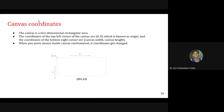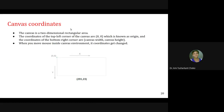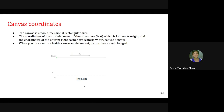By default, the canvas element has a width of 300px and height of 150px without any border or content. Custom width and height can be defined using CSS height and width properties, and the border can be applied using the CSS border property. Canvas is a two-dimensional rectangular area.